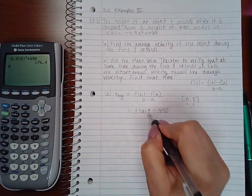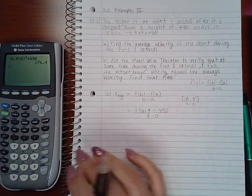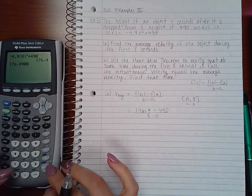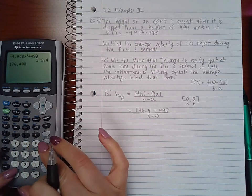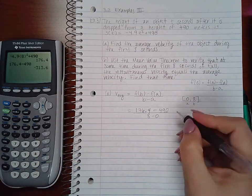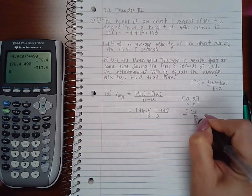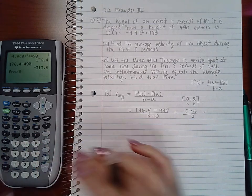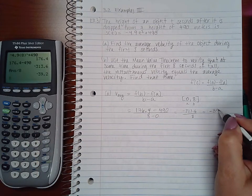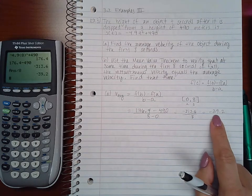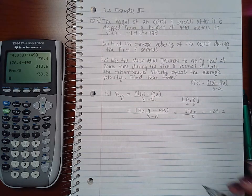And then at the bottom I have 8 - 0. So 176.4 - 490 is -313.6 divided by 8 is -39.2. So -39.2, that's my average velocity.